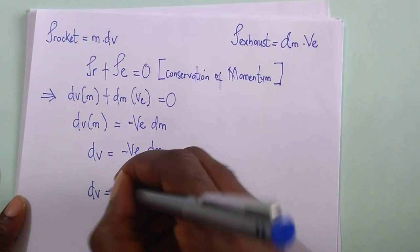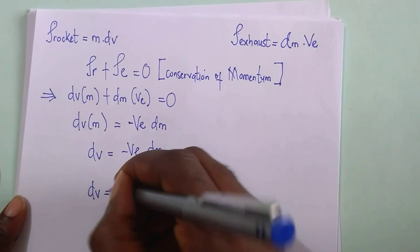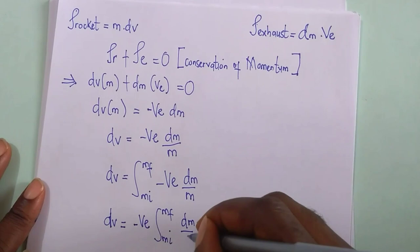Now, taking dv and minus ve as constants, we integrate the right-hand side of the equation from the time of dissipation of the initial mass to the final mass retained.